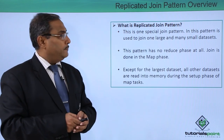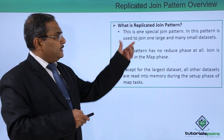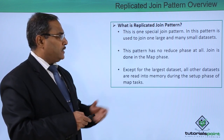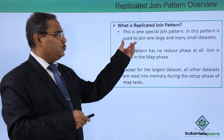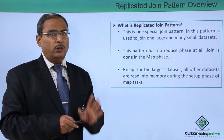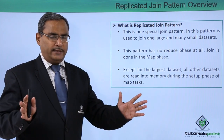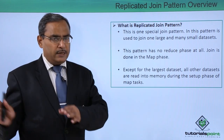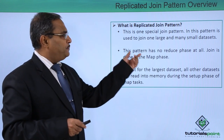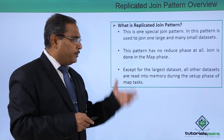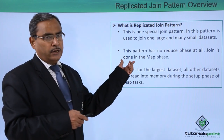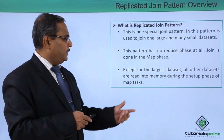What is the replicated joint pattern? This is a special joint pattern used to join one large and many small data sets. This pattern has no reduce phase at all — joining will be done only at the map phase.